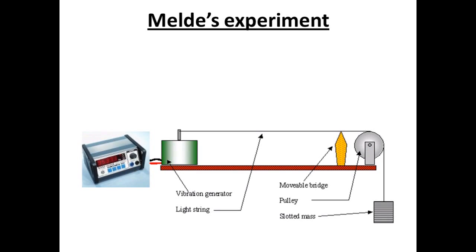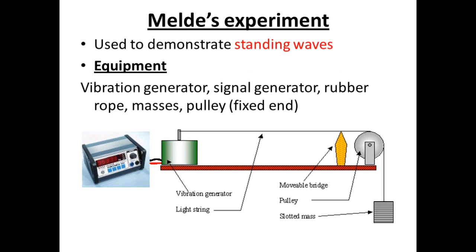In summary, that was Meld's experiment. It's used to demonstrate standing waves and harmonics in a medium. The equipment you need is something to vibrate, a signal generator that will give you a frequency. Instead of just shaking the rope, it's good to use something electric that's controlled, computerized. A string or rubber rope works best. Masses on a pulley so that you can vary the tension on the rope, and a moveable bridge or some sort of fixed end that can move.